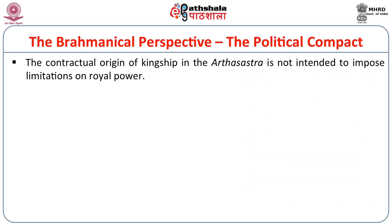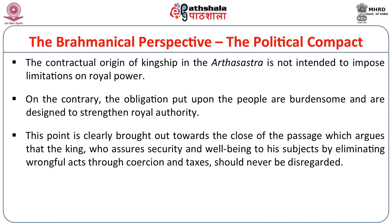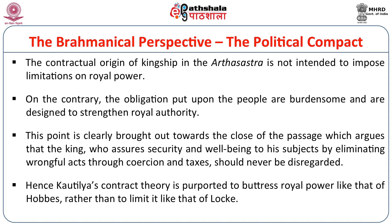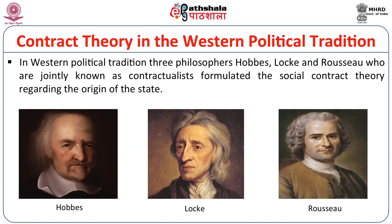The contractual origin of the kingship in the Arthashastra is not intended to impose limitations on royal power. On the contrary, the obligations put upon the people are burdensome and are designed to strengthen royal authority. This point is clearly brought out towards the close of the passage, which argues that the king who assures security and welfare to his subjects by eliminating wrongful acts through coercion and taxes should never be disregarded. Hence, Kautilya's contract theory is purported to buttress royal power like that of Hobbes, rather than to limit it like that of Locke. In Western political tradition, three philosophers — Hobbes, Locke and Rousseau — jointly known as contractualists, formulated the social contract theory regarding the origin of state.